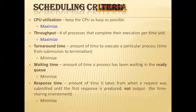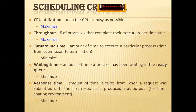There are a few criteria — goals or performance metrics — to keep in mind while scheduling processes. First is CPU utilization: we want to keep the CPU as busy as possible. Conceptually, CPU utilization can range from 0 to 100%. Second is throughput: one measure of work is the number of processes completed per unit time, which is called throughput.